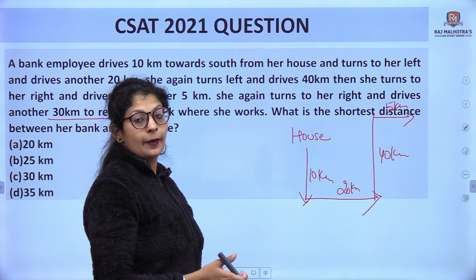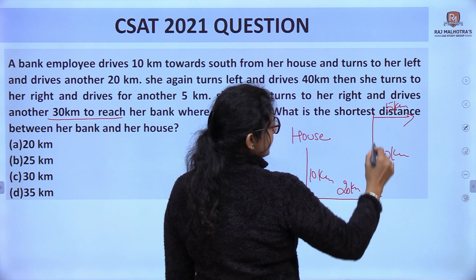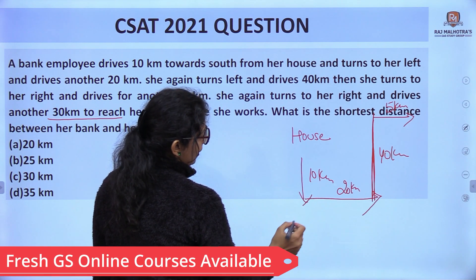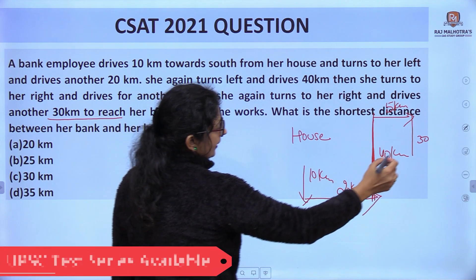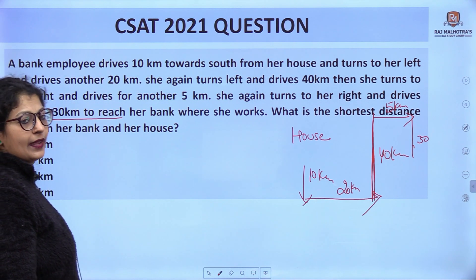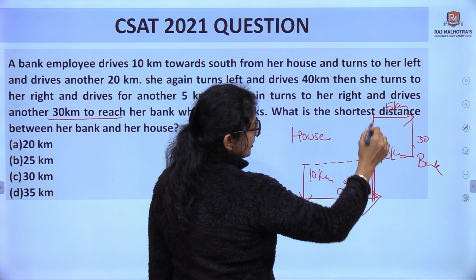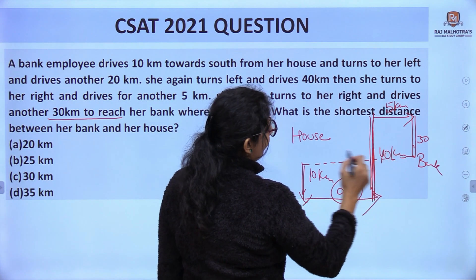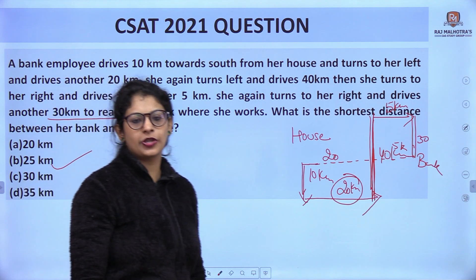She is in east direction, then south, then west. She drives another 30 kilometers and turns right again and drives 30 kilometers to reach her bank. When right turns or left turns come, we have to carefully track the person's position and facing direction. This is 40 kilometers and this is 10 kilometers, so the difference is 30. The horizontal distances are 20 and 5, so the total is 20 plus 5 equals 25 kilometers. The answer is B option, 25 kilometers.